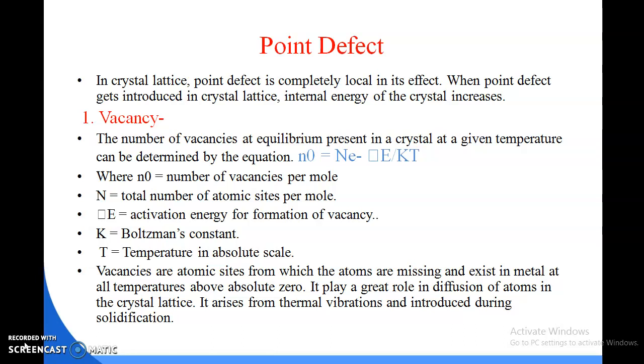The number of vacancies at equilibrium present in a crystal at a given temperature can be determined by the equation N0 = N e^(-E/KT). Where N0 is number of vacancies per mole, N is total number of atomic sites per mole, E is activation energy for formation of vacancy, K is the Boltzmann constant, and T is temperature in absolute scale.